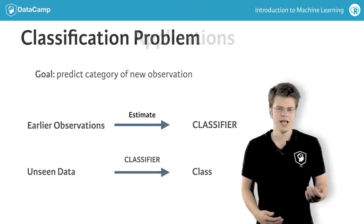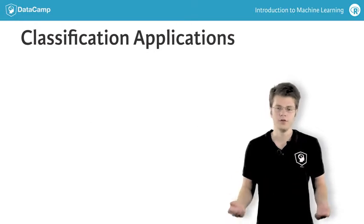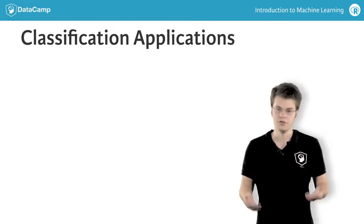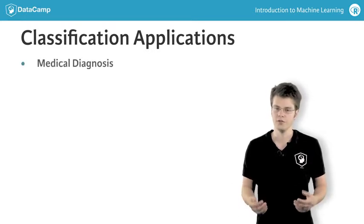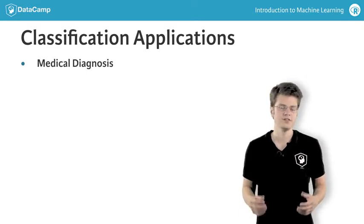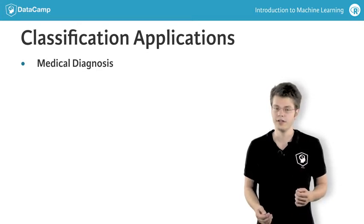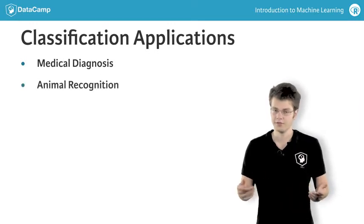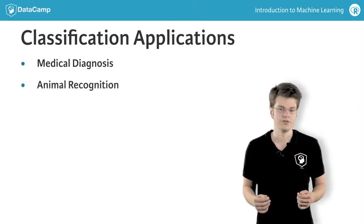The possible applications of classification are very broad. For example, after a set of clinical examinations that relate vital signals to a disease, you could predict whether a new patient with an unseen set of vital signals suffers that disease and needs further treatment. Another totally different example is classifying a set of animal images into cats, dogs and horses, given that you have trained your model on a bunch of images for which you know what animal they depict.